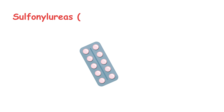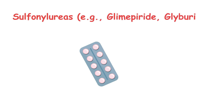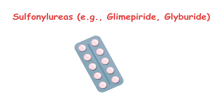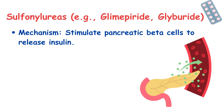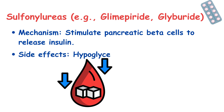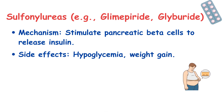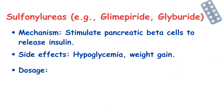Sulfonylureas — examples include glimepiride and glibenclamide. These push the pancreas to release insulin, but they come with a risk of hypoglycemia and weight gain. Start with 1 mg, adjusting up to 8 mg daily as needed.